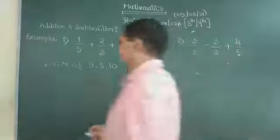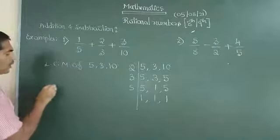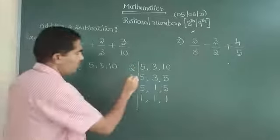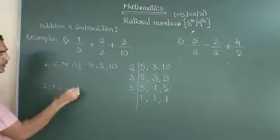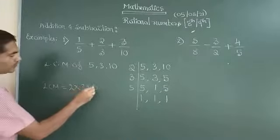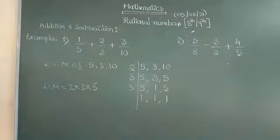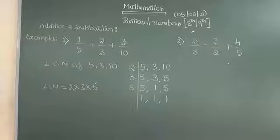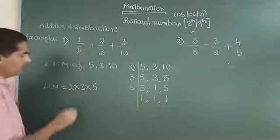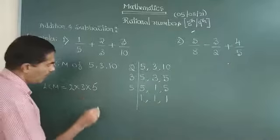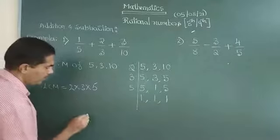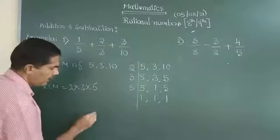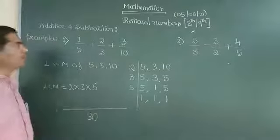Then write, what is the LCM here? LCM is the product, 2 into 3 into 5. This is the LCM. This much work when I do, doing this much work is more than sufficient now to understand further. Then how to do these operations. This LCM you write as a denominator. 2 times 3 times 5 is 30. 30 is the denominator, common denominator for all three.